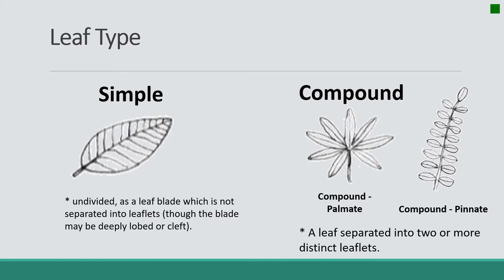Compound palmate is pretty easy to remember if you imagine palmate as looking a lot like your palm — the leaflets spread out kind of like a hand. Pinnate is where the leaflets are organized almost like a ladder — they step up one rung after another.